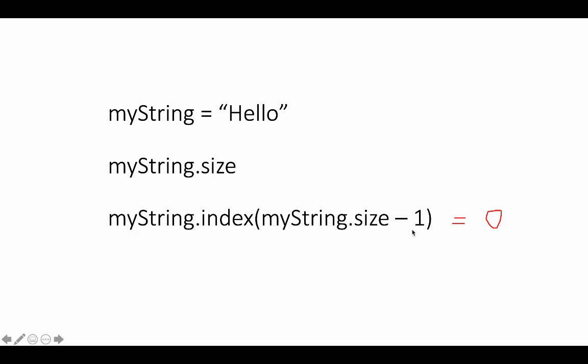So it'd actually be 4. So if we look at this, if myString is 5, this would be 5 minus 1 equals 4. So it would just be accessing the index of myString at index 4, which if we look up here, the fourth index is 0, 1, 2, 3, 4, which is an O. That's perfect, that's what we wanted.